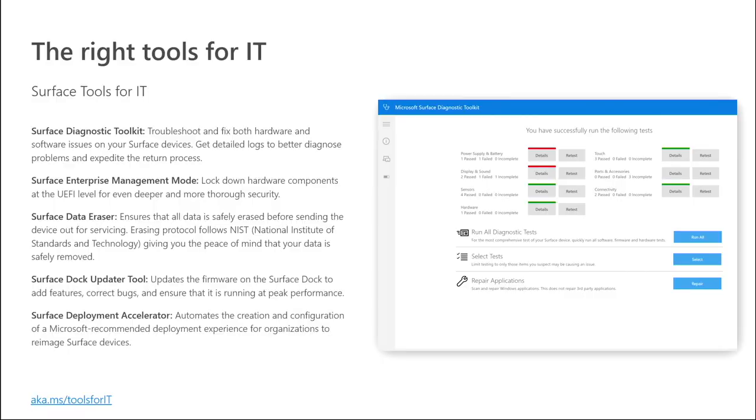Another tool in our lineup is the Surface Data Eraser. If you have a need to completely destroy every ounce of data on a Surface, this is the way to go. A good use case is if you have very sensitive information that really cannot leave your organization's environment — if you're returning that device for a warranty claim or you're no longer using it. The Surface Data Eraser runs through USB and will completely erase everything on the hard drive, and then allow that Surface to become usable again, so you can accept a new Windows 10 installation and continue to use the Surface.